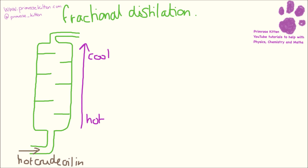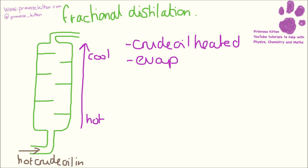The crude oil is heated as it goes in — we need to evaporate it. Not all of it is going to be evaporated. There is going to be some sludgy stuff that just won't evaporate, and that's what's going to come out the bottom as bitumen.